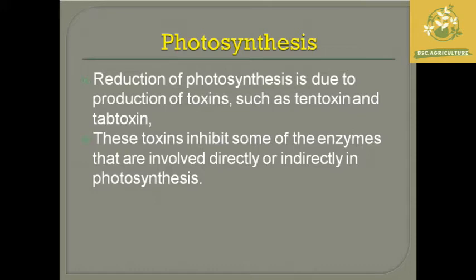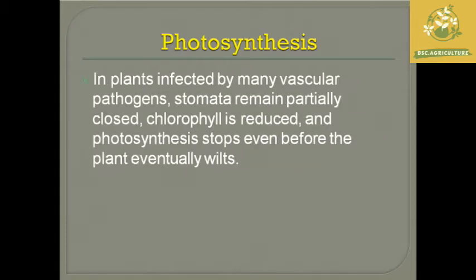There can be a reduction of photosynthesis mainly due to the production of toxins such as tentotoxin and stabtoxin by the pathogen. These toxins inhibit certain enzymes directly or indirectly involved in photosynthesis. In plants infected with vascular pathogens, the stomata remain partially closed and chlorophyll is reduced in that particular plant.